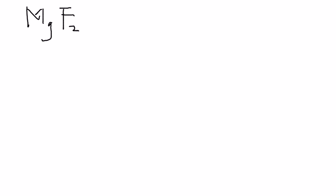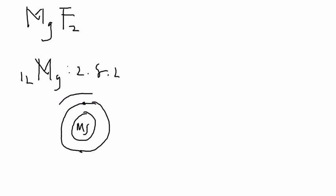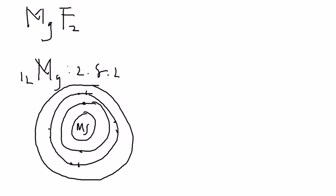Let's draw the dot diagram to show the structure of the magnesium atom. Magnesium has 12 protons, so its electron configuration is 2, 8, 2. The diagram shows 2 electrons in the first layer, 8 in the second layer, and 2 electrons at the outermost layer.